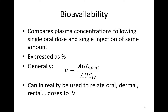If the proposed route were not oral — for example dermal patches or sublingual — then we would still use the AUC for the IV dosing as the comparator, but the numerator in the equation would be the AUC following the proposed dose route.